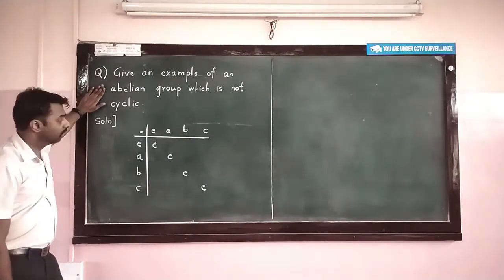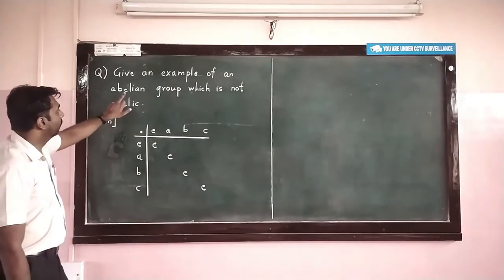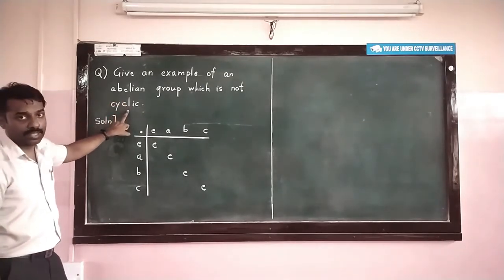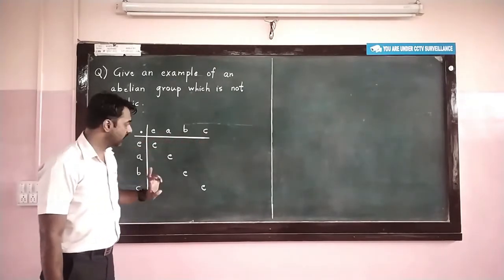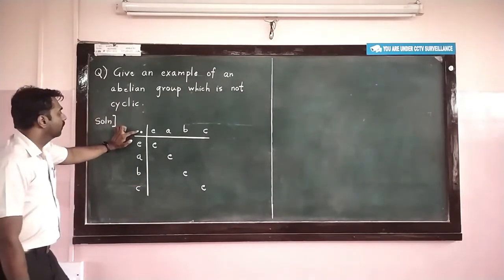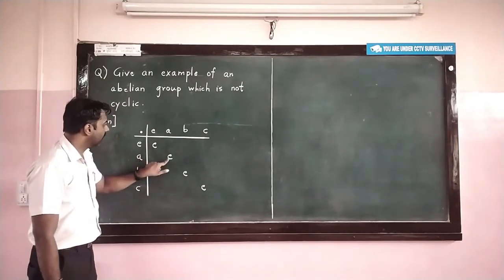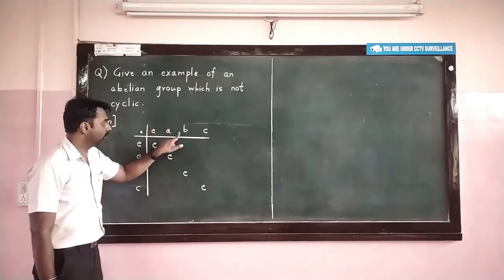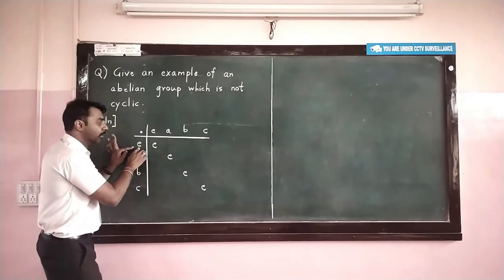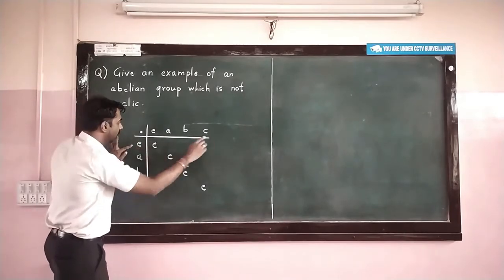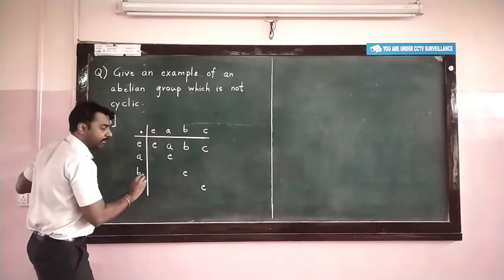So what is that example? We are trying to construct a group G which will be abelian but not cyclic. I am considering a group with 4 elements E, A, B, C and a binary operation. I am going to put identity on the diagonal of the operation table, meaning A·A is identity, B·B is identity, C·C is identity. The first row and column are obvious since multiplying identity gives back each element.